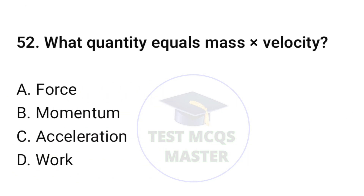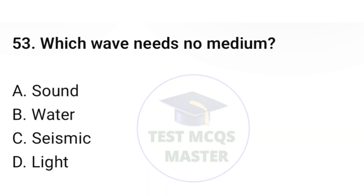Question number fifty-two: what quantity equals mass multiplied by velocity? The correct option is B, momentum. Question number fifty-three: which wave needs no medium? The correct option is D, light wave.